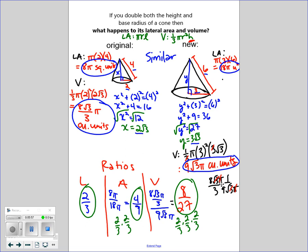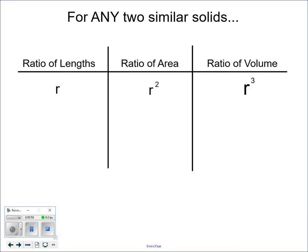Let's take a closer look. For any two similar solids, it could be spheres, cylinders, cones, whatever. You don't even have to know the formula. The ratio of the lengths, areas, and volumes are the same. The ratio of the area is whatever the ratio of the length is, squared. And the ratio of the volume is whatever the ratio of the lengths is, cubed. And I can't emphasize this enough, it always goes back to the ratio of the lengths. That is your base, that is your foundation.